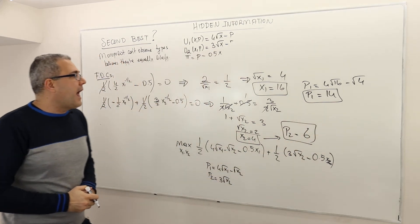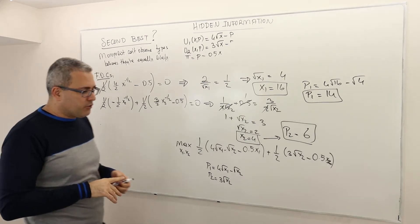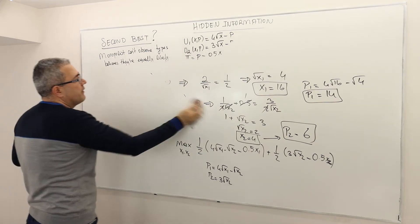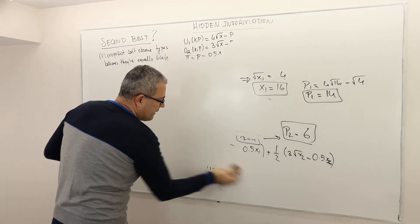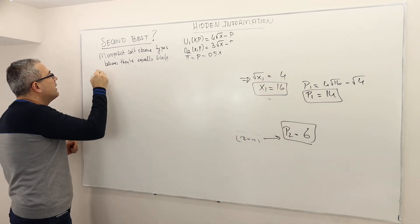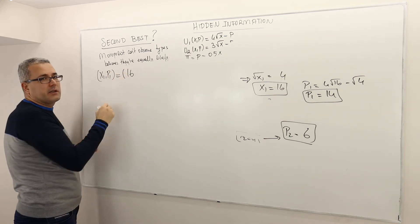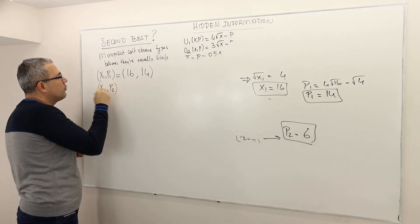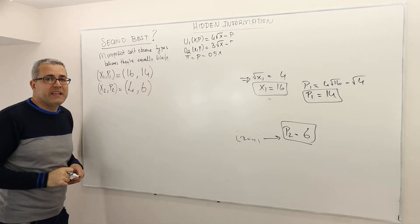In the second best, the monopolist offers two packages. Package 1, intended for type 1, includes 16 bottles of water at a price of 14. Package 2, intended for type 2, includes 4 bottles of water at a price of 6.